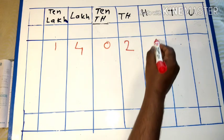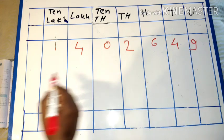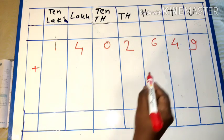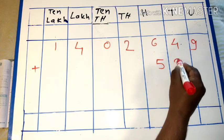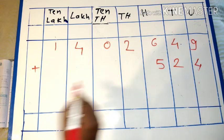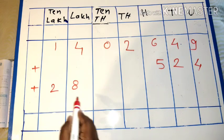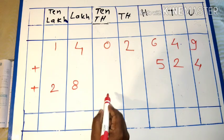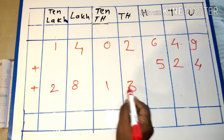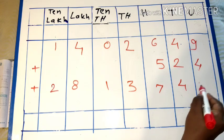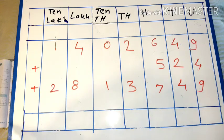Next example: two thousand six hundred forty-nine plus five hundred twenty-four plus twenty-eight lakh thirteen thousand seven hundred forty-nine. This is an example we will solve.